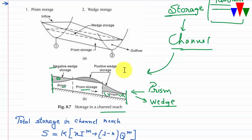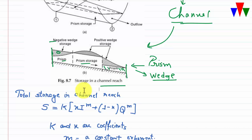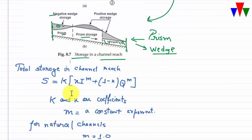During rising stages, wedge storage volume is considerable because the water surface is not parallel to the channel bed — inflow exceeds outflow. As flow drops and outflow becomes greater than inflow, wedge storage becomes negative. In stream flow routing the solution is more complicated than reservoir routing because wedge storage is involved and it is a function of both inflow and outflow.